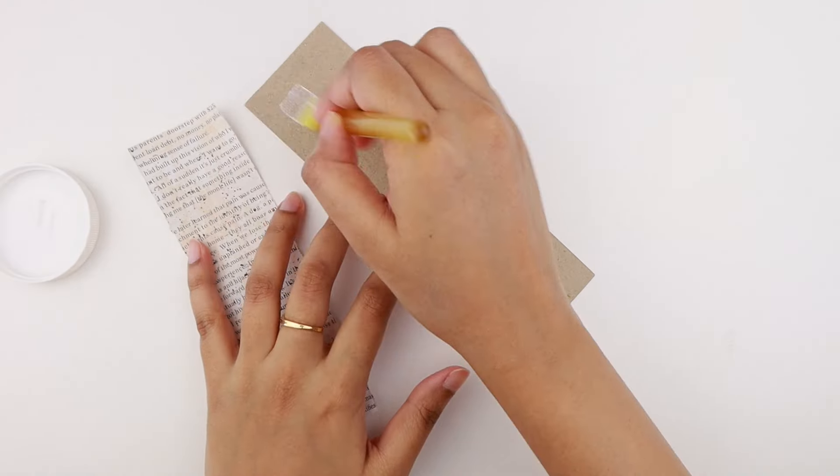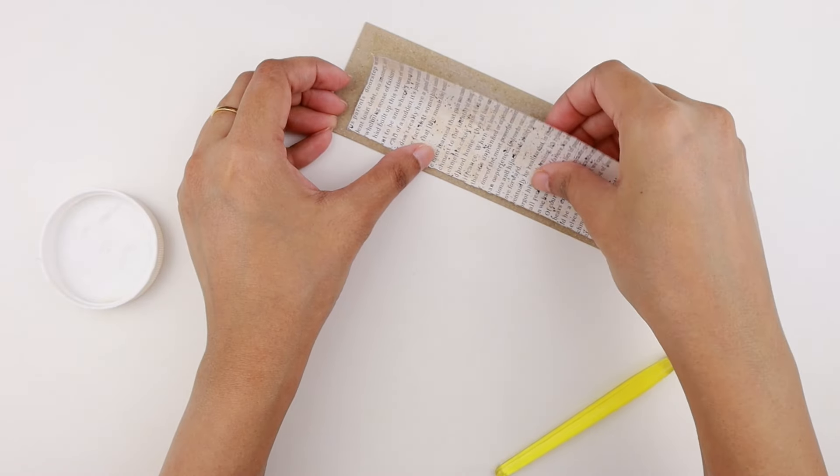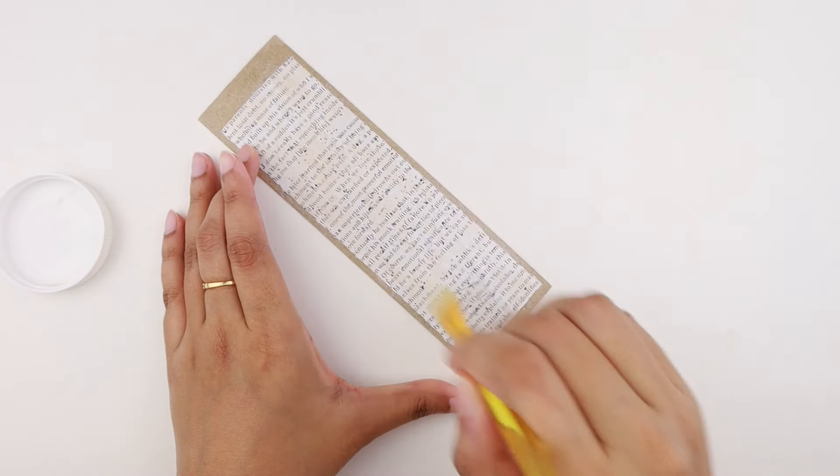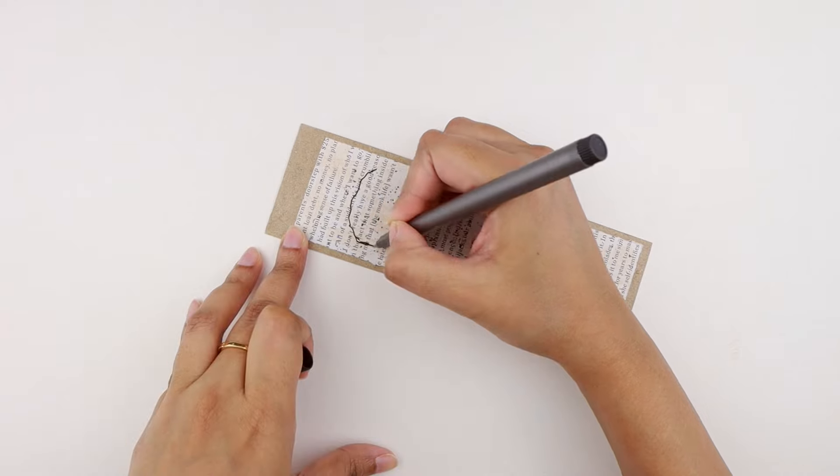Using Mod Podge, we're going to adhere the paper to the cardstock. To seal it in place, I'm applying a very thin layer of Mod Podge on the top. Now that the Mod Podge is dry, I'm roughly drawing the outline of a poppy flower.